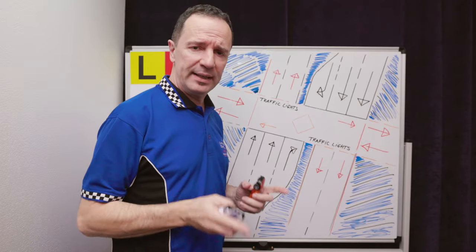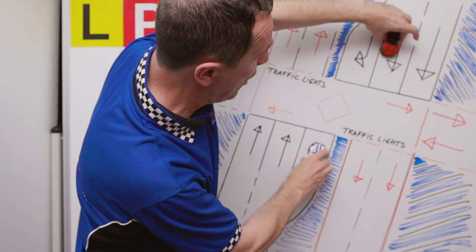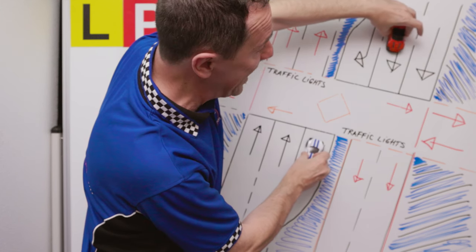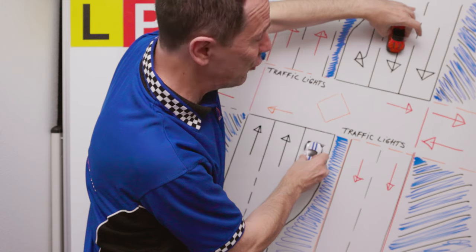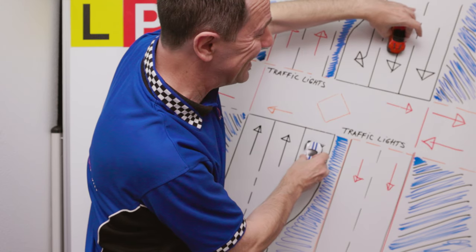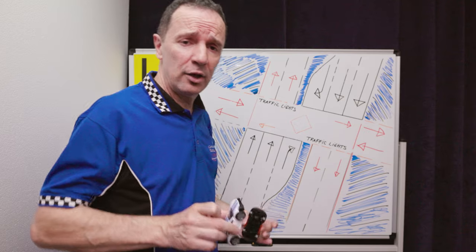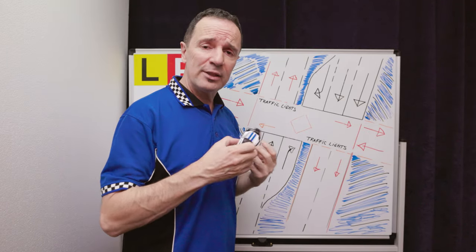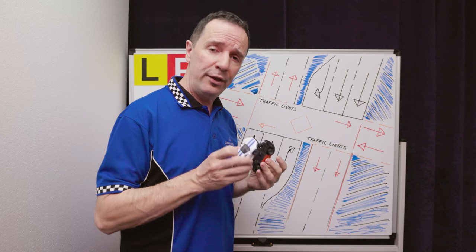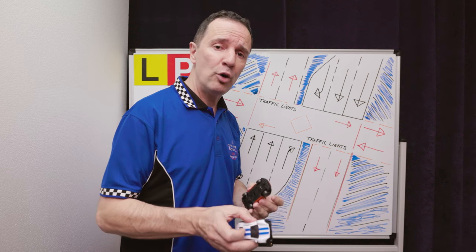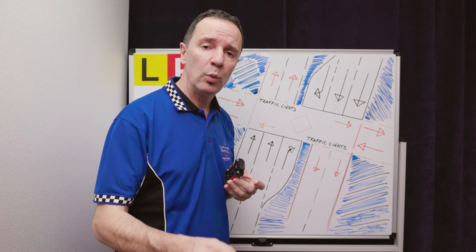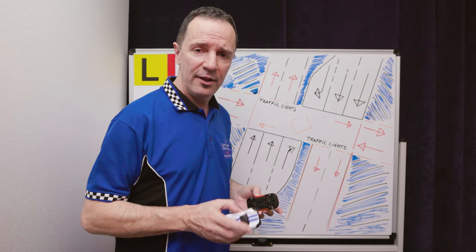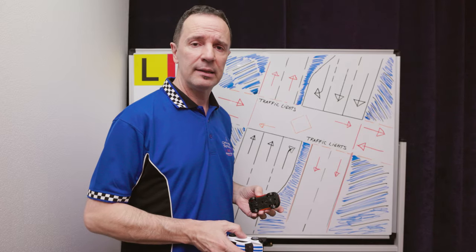One more thing to understand: when your traffic lights start to change, the opposite direction traffic lights change at exactly the same time — there are no exceptions. You've got to have that understanding and practice on these intersections a lot with your instructors and private supervisors, providing you're at the level where you can respond properly to verbal instructions. Thank you for watching and I'll see you in the next video.